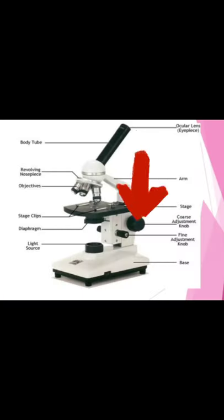The next part is the coarse adjustment knob — a rapid control which allows for quick focusing by moving the objective lens or stage up and down. Another adjustment knob is the fine adjustment knob — a slow but precise control used to fine focus the image when viewing at higher magnifications.